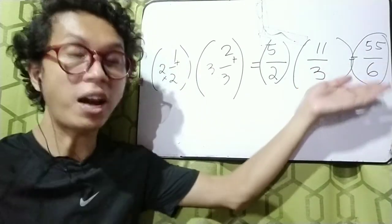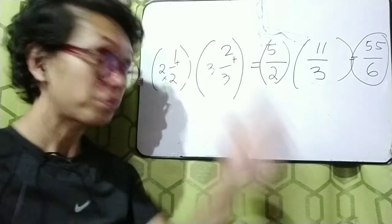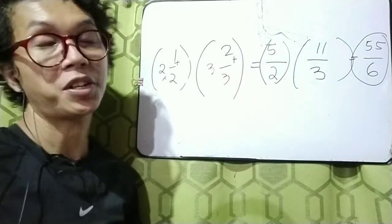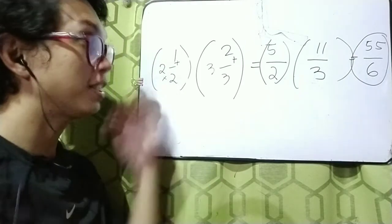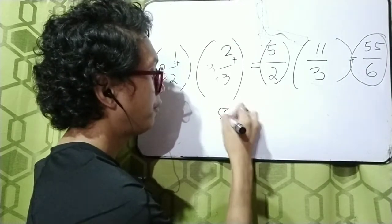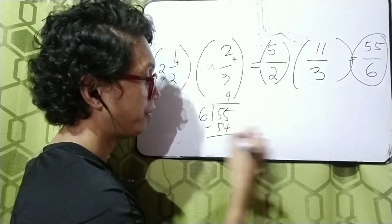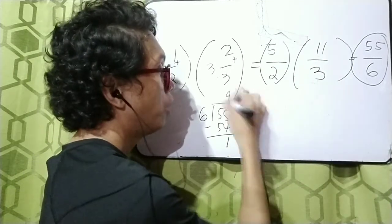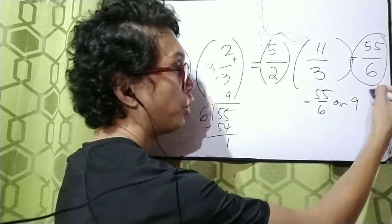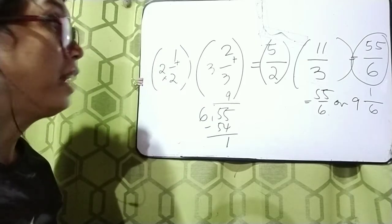Our answer in improper fraction is 55 over 6. We call it an improper fraction because the numerator is greater than the denominator, whereas in a proper fraction the numerator is lesser than the denominator. To transform this improper fraction into a mixed number, we divide 55 by 6: 6 goes into 55 nine times (9 times 6 is 54), giving a remainder of 1. So the whole number is 9, the remainder 1 is the numerator, and 6 (the divisor) is the denominator — giving us 9 and 1 over 6.